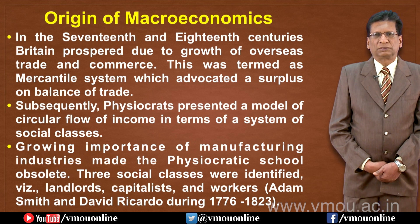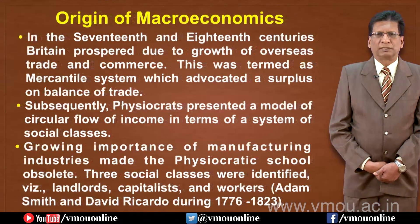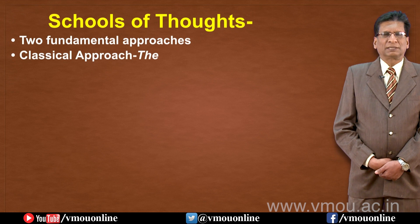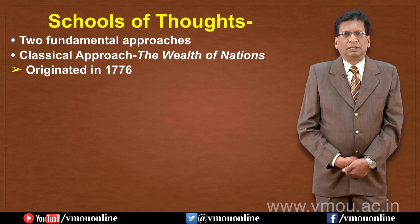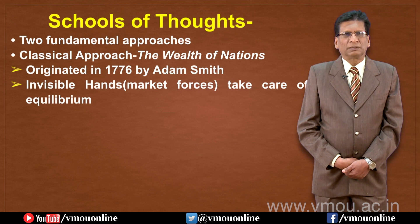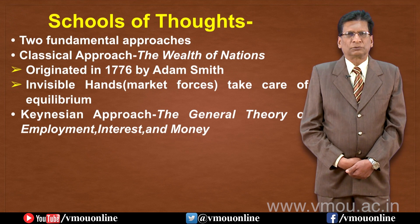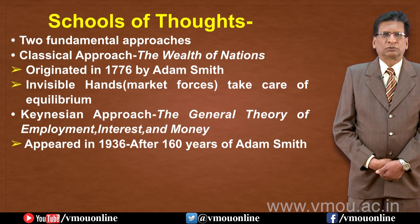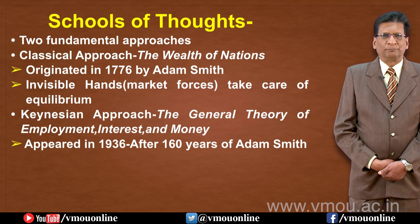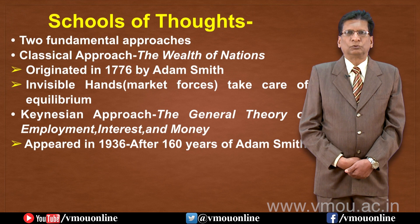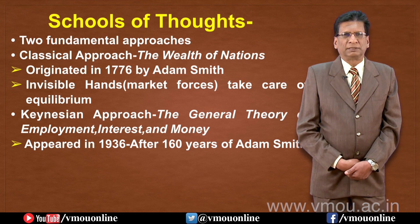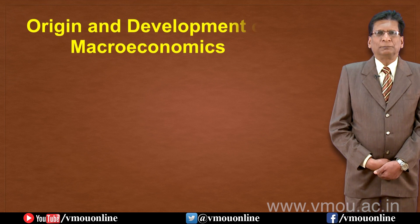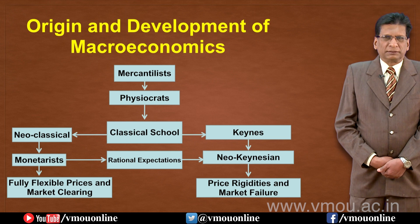Adam Smith and David Ricardo, writing in 1776 and 1817 respectively, represent two key approaches in macroeconomics. The first is the Classical Approach, originating from the Wealth of Nations, written by Adam Smith in 1776. In that book, Adam Smith argued that Invisible Hands take care of equilibrium. After that, the Keynesian approach came, published as the General Theory of Employment, Interest and Money in 1936.